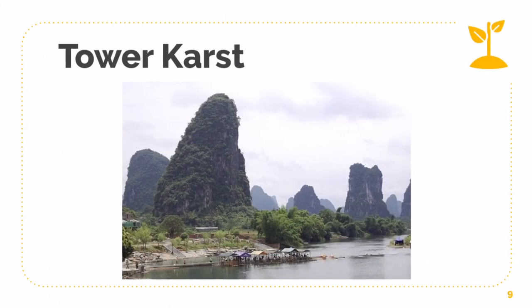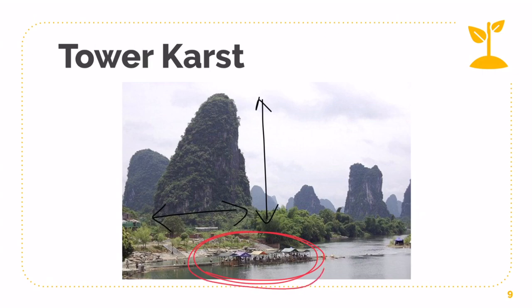An example would be this image — I think this is Vietnam or somewhere around there. This is how a Tower Cast looks. As you can see, it is extremely high and can also be extremely wide, illustrating the diameter-versus-height ratio. If it ever comes up as a case study, make sure you always compare to the size of the people — you can see the people down here are extremely small, barely visible, whereas the Tower Cast is enormous. Always point that out in the exam when they ask you to compare size differences.